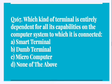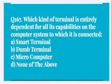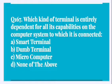Question number 167: What kind of terminal is entirely dependent for all its capabilities on the computer system to which it is connected? Options are: A, smart terminal; B, dumb terminal; C, microcomputer; D, none of the above. Correct answer is option B, that is dumb terminal.